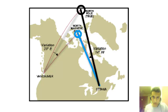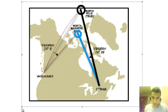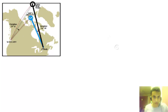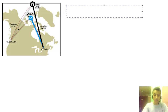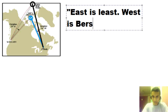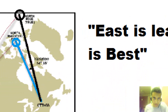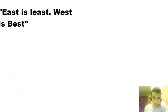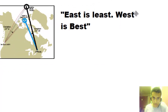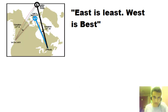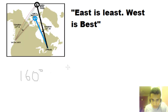The rule for this is: east is least and west is best. We have a variation of 14 degrees west when traveling from Ottawa. Let's say we set a course of 160 degrees — that is our true heading — and the variation is 14 degrees west.